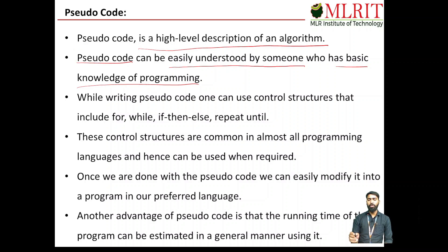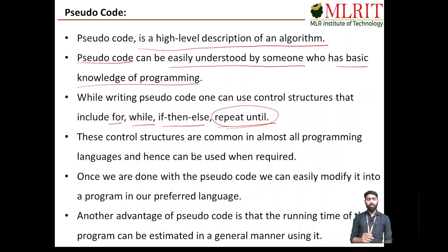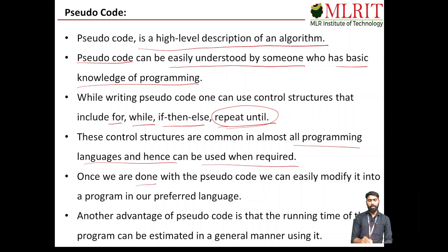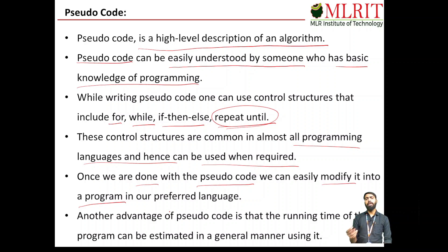While writing pseudo code, one can use control structures such as for loop, while, if-then-else, and repeat-until. These control structures are common in almost all programming languages and can be used when required. Once you complete the pseudo code, you can easily convert it into a program in your preferred language — maybe C, C++, Java, or Python.